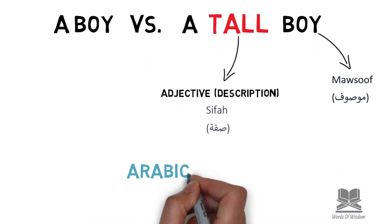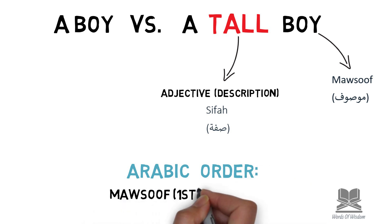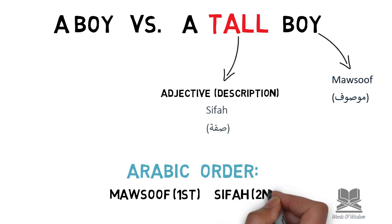So if you had 'a tall boy', the word 'tall' would be your sifa and 'boy' would be the musuf. Now in Arabic, the only difference in comparison to English is that in Arabic they bring the person or thing being described first, and then the adjective comes afterwards. So where you would have 'the tall boy', 'boy' would come first and 'tall' would come second, meaning the musuf comes first and the sifa comes second.